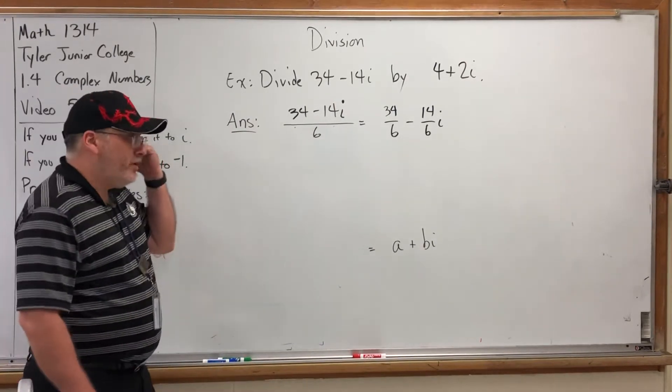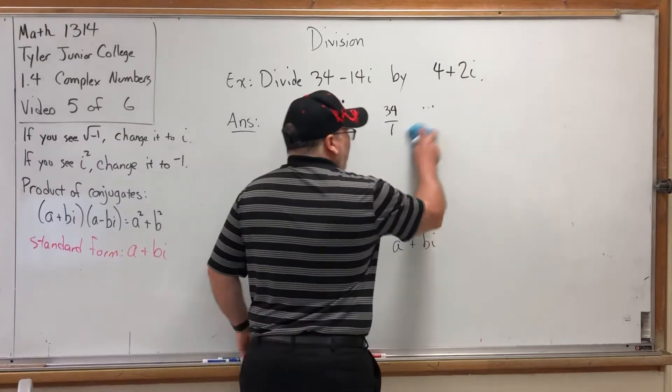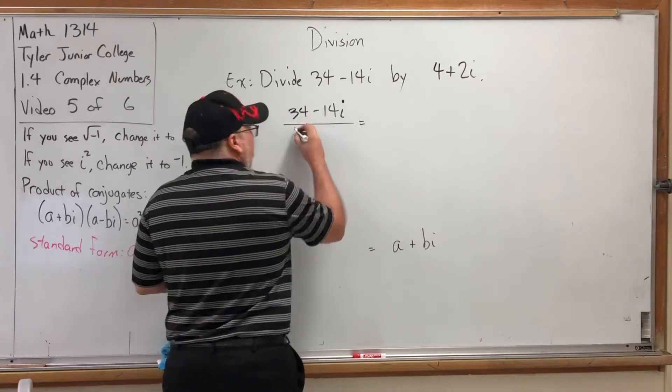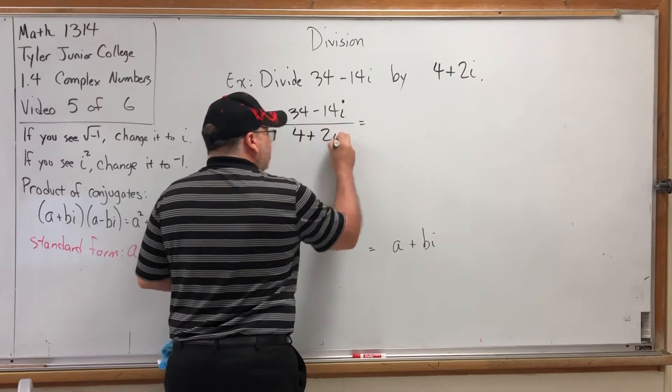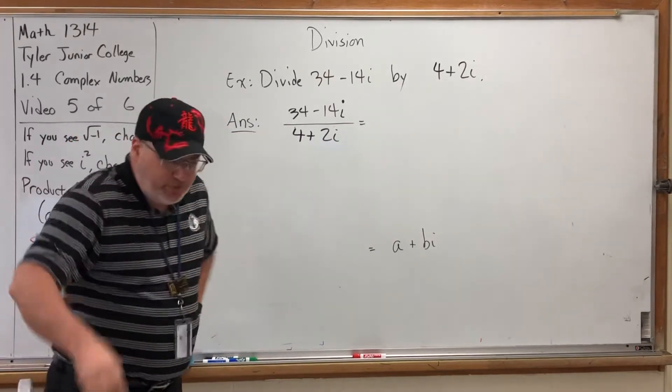So if there was no i in the denominator, we're pretty much one move from getting an answer in the correct form. Except there was an i in the denominator. I believe the denominator was 4 + 2i. It says it right there.